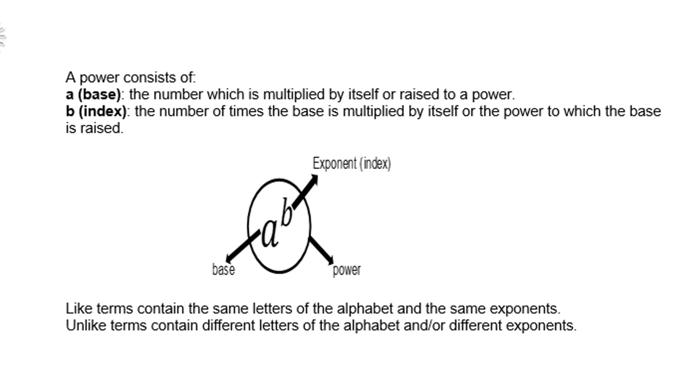Like terms contain the same letters of the alphabet and the same exponents. Unlike terms contain different letters of the alphabet and/or different exponents.